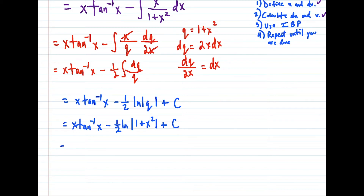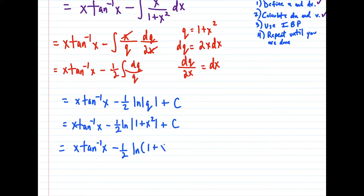And now we just have to substitute everything back in. So we have x tangent inverse of x, minus one half natural log absolute value of (1 + x²), and then plus c. If we stop here, this is a little bit sloppy, because the absolute value of (1 + x²) is just (1 + x²) — it's always positive. Any number you plug in for x, 1 + x² is always a positive number, which tells us we can just get rid of the absolute value. So the answer is x tangent inverse x, minus one half natural log (1 + x²), plus c.